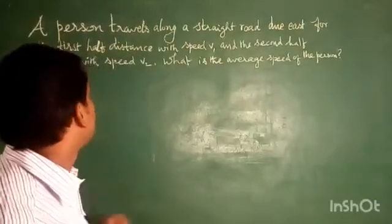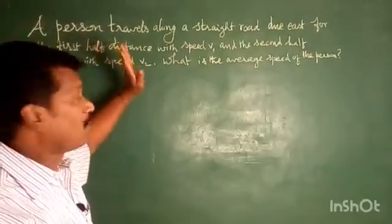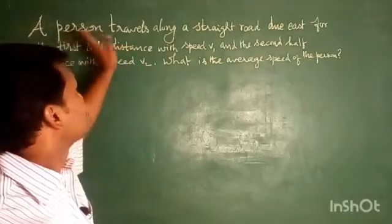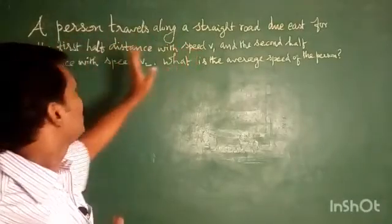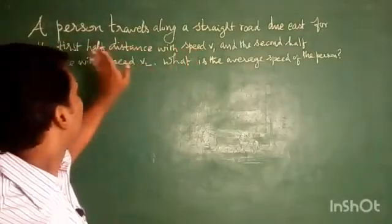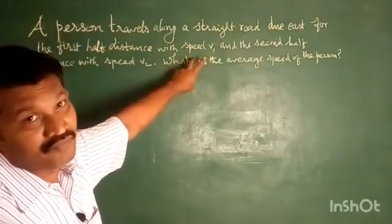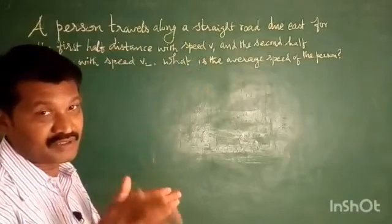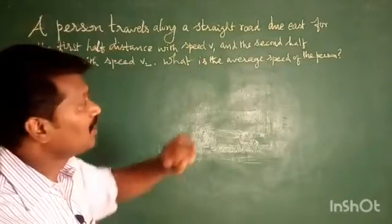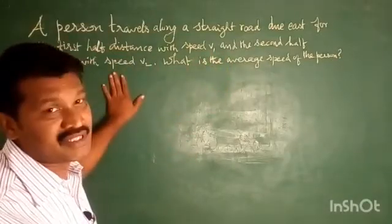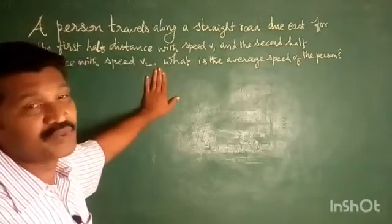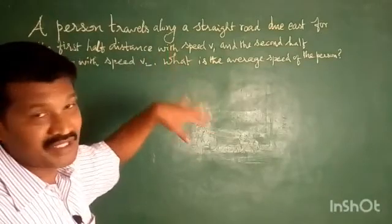Hi students, one numerical problem. A person travels along a straight road due east for the first half distance with speed v1. The first distance is speed v1 and the next half distance is speed v2. What is the average speed of the person?